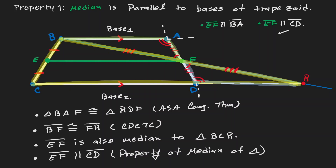How come EF is also parallel to BA? That's the transitive property. Remember that CD was parallel to BA — that's how we have defined trapezoids. So if EF is parallel to CD, then by the transitive property, EF is also parallel to BA. This is not a formal proof; we just wanted to illustrate this idea.